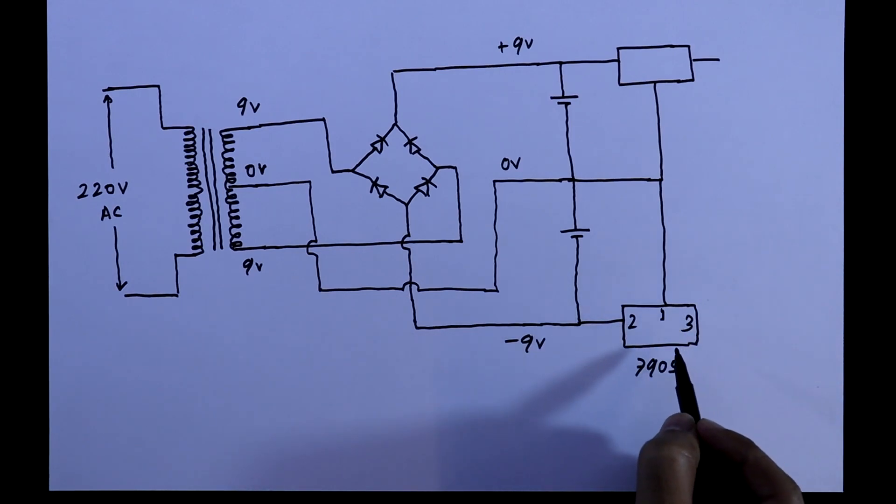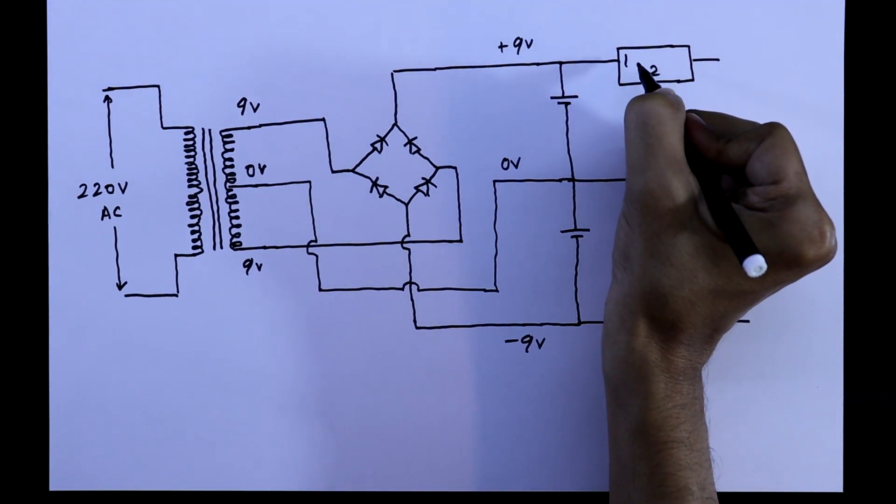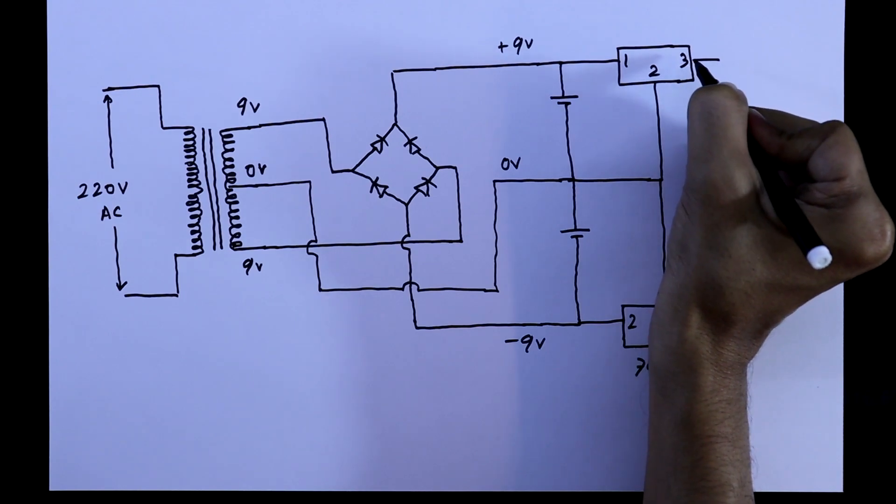For this IC, pin 2 is input, pin 1 is ground, and pin 3 is output. For this, pin 2 is ground, pin 1 is input, and pin 3 is output.